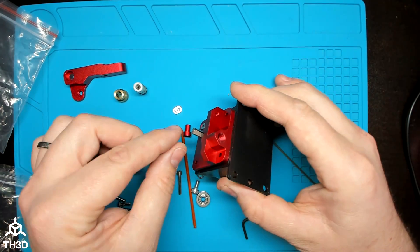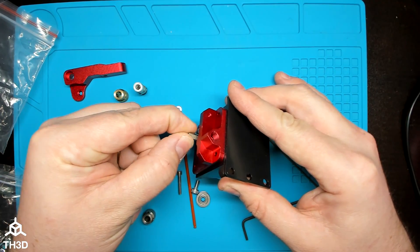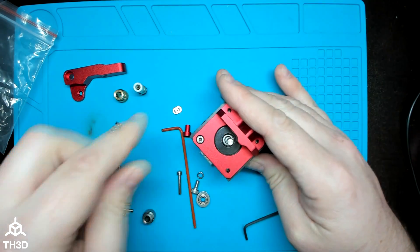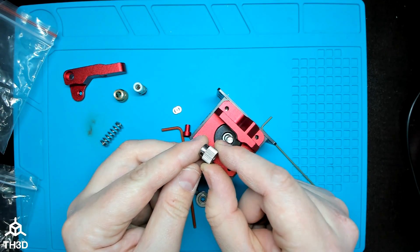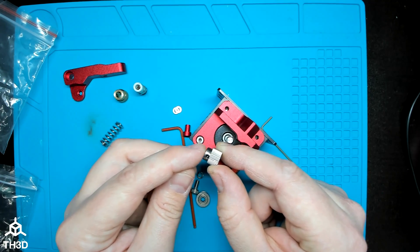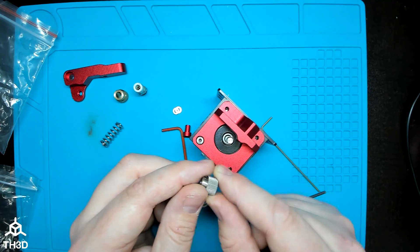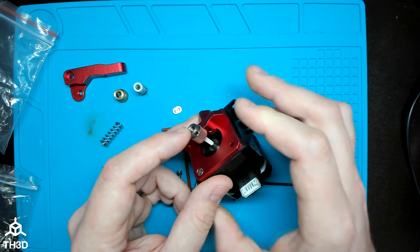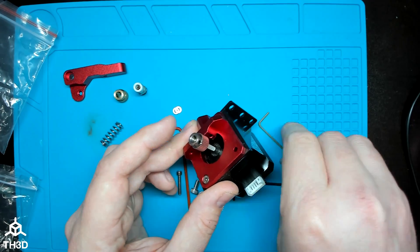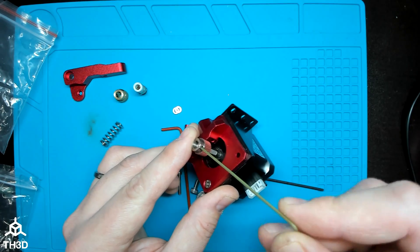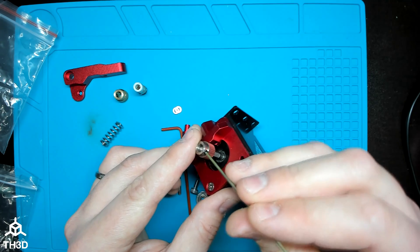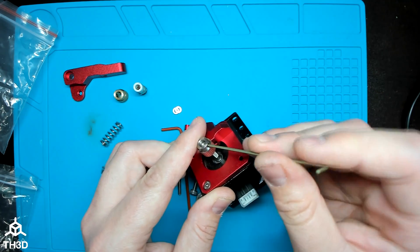On your motor shaft, you'll notice that most steppers have a flat spot on the shaft. If you notice on the feeder gear, we have two grub screws. You want one of these grub screws on that flat spot of the motor shaft. When you slide this on, if it doesn't go on all the way, just take your 1.5 millimeter hex wrench and back the grub screws out a little bit. You may have to do this for both.